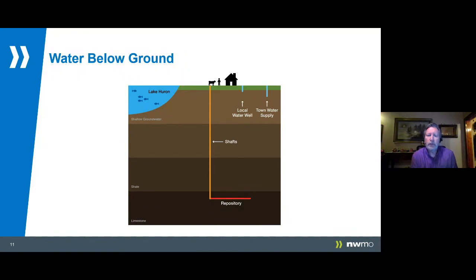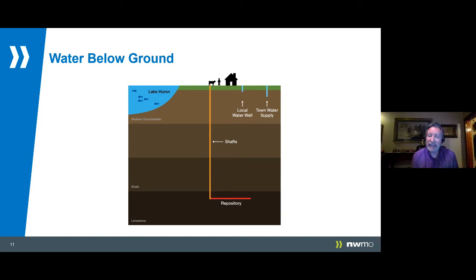So what does that mean? It means the surface water is disconnected from everything that happens deep down underground. Whatever site we select for a repository, we're building it so deep below the water that we see today that it'll be completely disconnected from anything that happens around our repository. On any appreciable time scale, the surface water will never ever come into contact with the repository. Now it's reasonable to ask — how do we know this? We know this through the work that we do to better understand the geology and water systems of this region.